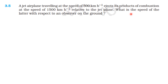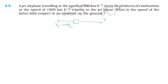What is the speed with respect to the ground? The speed of the jet airplane with respect to the ground is 500 km per hour. The speed of the products with respect to the jet plane is 1500 km per hour.